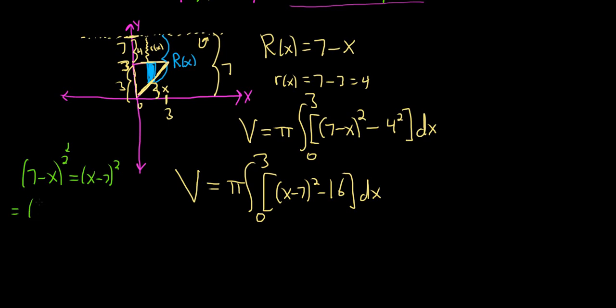Watch this. You can pull out a negative 1 and write it like this. Clever, right? Negative 1 times x is negative x. Boom. There it is. Negative 1 times negative 7 is positive 7. Boom. There it is. And then you square this one, and then you square this one. And that's 1.